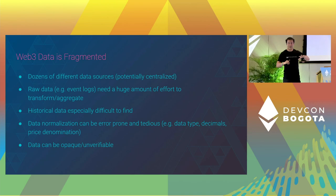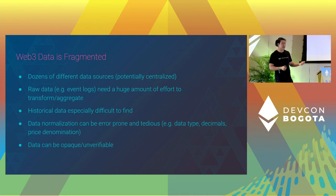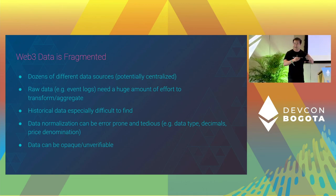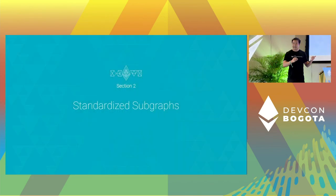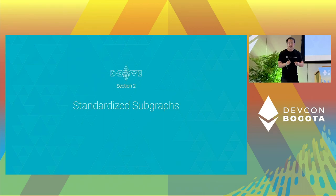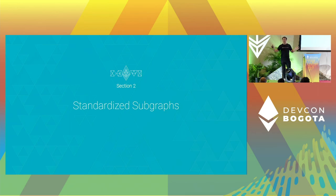If you're working with raw data, it takes a lot of effort to aggregate and transform it into something you can use. For example, TVL and revenue — those all require a lot of work. Historical data is often difficult to find; you probably need an archive node, and those are often difficult to access. This is actually a problem that Mazari ran into when we first got into the on-chain space. We're a big data provider trying to get a lot of data, and it was difficult for us to find it. So we decided to collaborate with The Graph to work on standardizing subgraphs to solve this problem for everyone in the space.